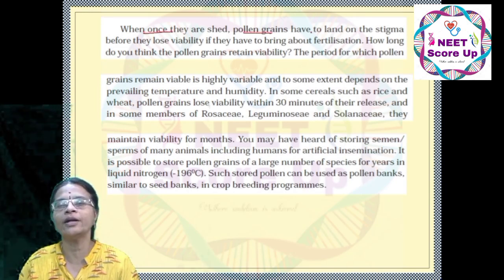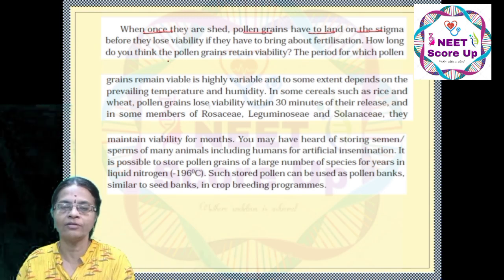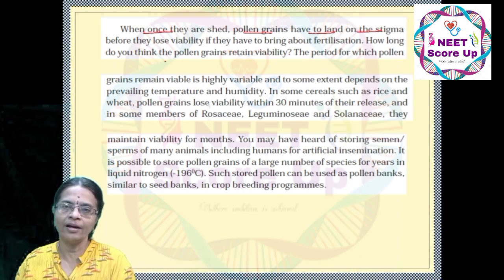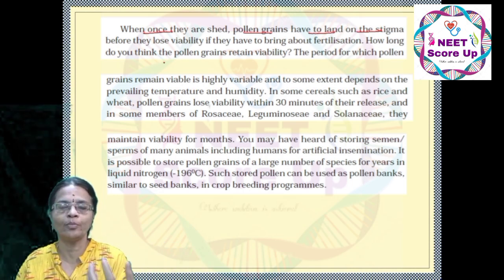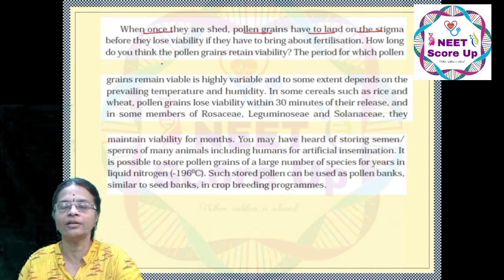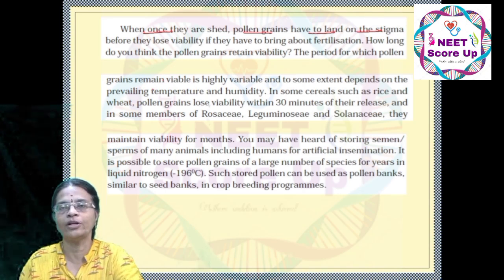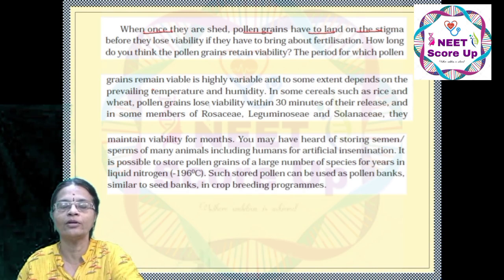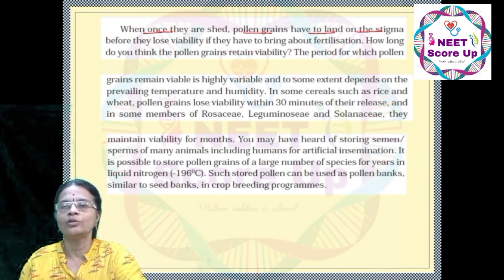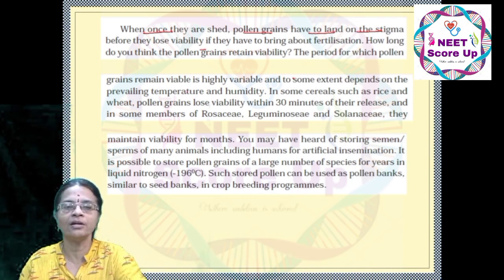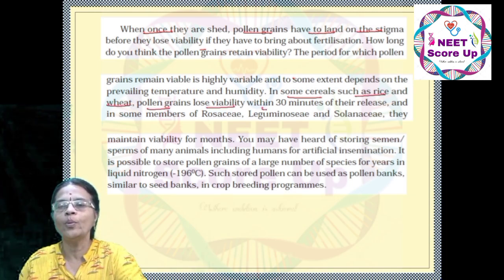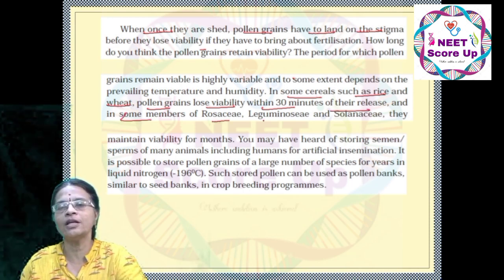Once pollen grains are shed, they need to land on the stigma. This requires some agents: water pollination, wind pollination, and insect pollination. Pollination is the transfer of pollen from the anther to the stigma. In self-pollinated plants, this is easier. In some cereals such as rice and wheat, pollen grains lose their viability within 30 minutes of their release. In some members of Rosaceae, Leguminosae, and Solanaceae, they maintain viability for months.